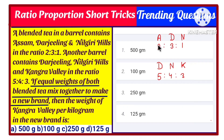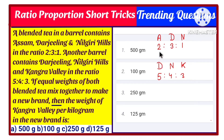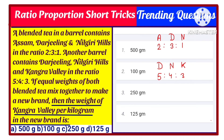If equal weights of both blended tea mixtures are mixed together to make a new brand — that means if we take 5 kg of this mixture, then the other will also be 5 kg; equal weight is taken, and this is very important. Now it is asked: what is the weight of Kangara valley per kg in the new brand? You need to find how much Kangara valley is present in 1 kg of the new brand.